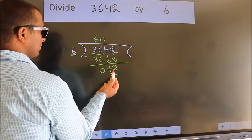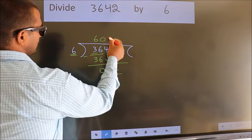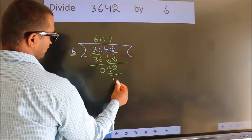So, 42. When do we get 42? In the 6 table, 6 times 7 is 42.